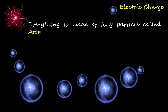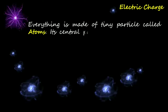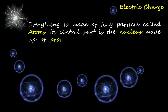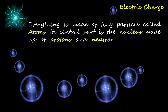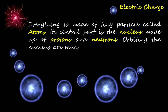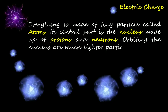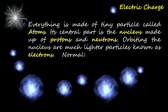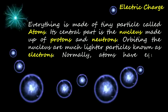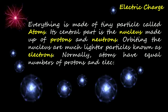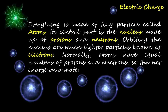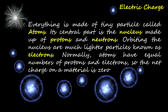Everything is made of tiny particles called atoms. The central part is the nucleus, made up of protons and neutrons. Orbiting the nucleus are much lighter particles known as electrons. Normally, atoms have equal numbers of protons and electrons, so the net charge on a material is zero.